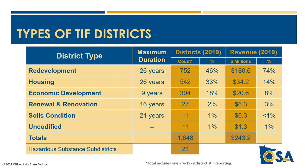There are five statutory types of TIF districts in Minnesota, each with their own requirements and limitations. Redevelopment, housing, and economic development districts make up 97 percent of all districts. There are also renewal and renovation districts and soil condition districts. There are also some uncodified district types created by special laws over the years. There's one type of sub-district that can be created within a normal TIF district to capture additional increment to address hazardous substance remediation.